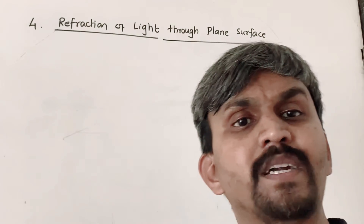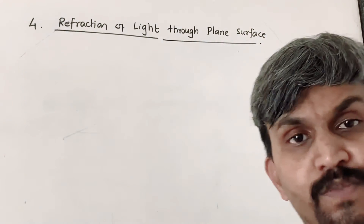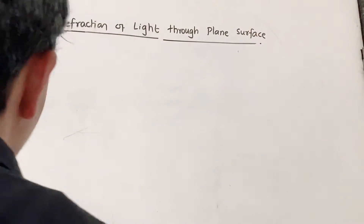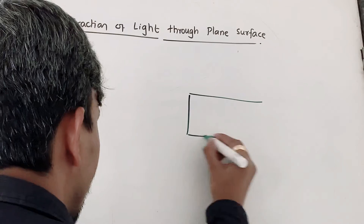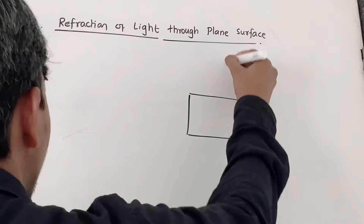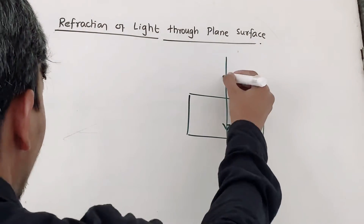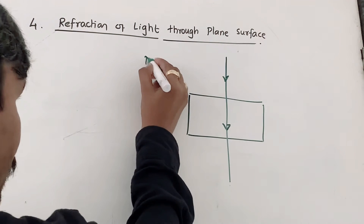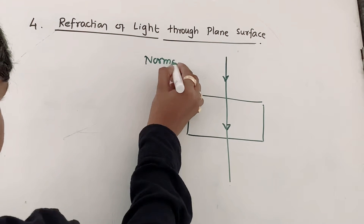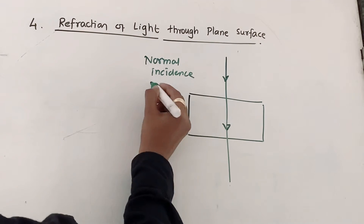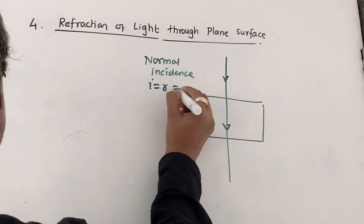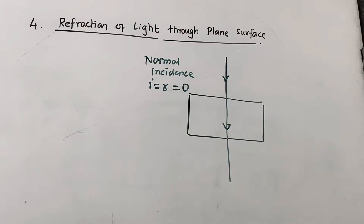In this chapter, we are dealing with the first part — what are the laws of refraction. We will begin with a glass slab. When light is incident that is called normal incidence. For normal incidence, your angle of incidence and angle of refraction will be equal. Now we are not dealing with normal incidence; we will go with oblique incidence.